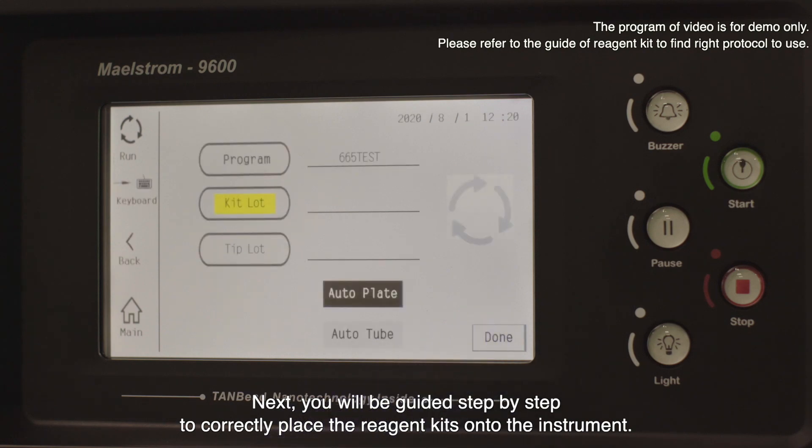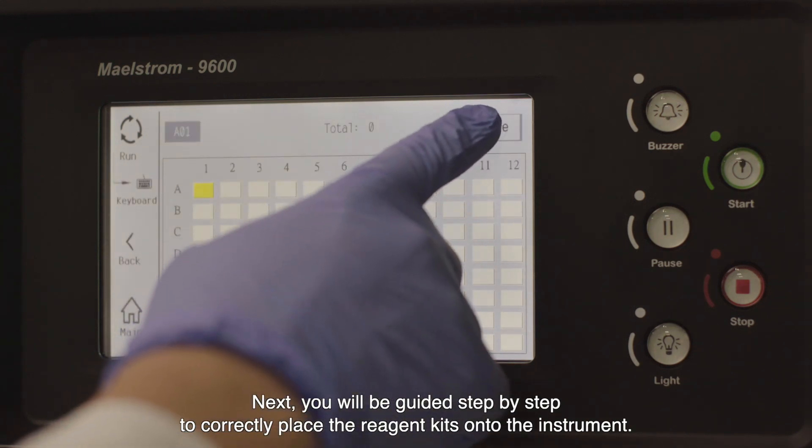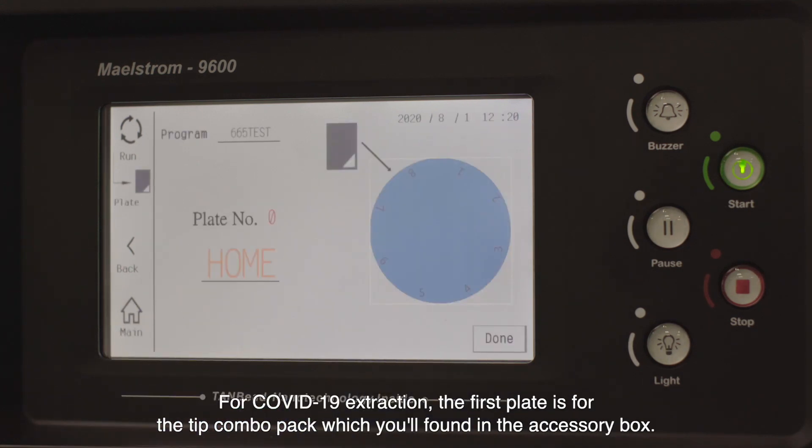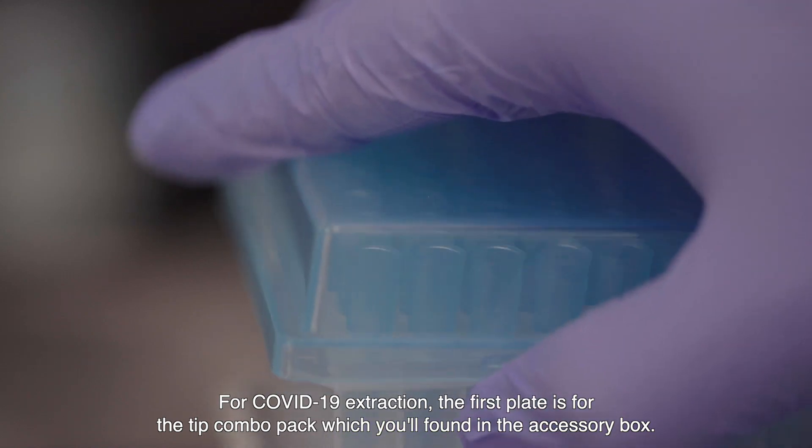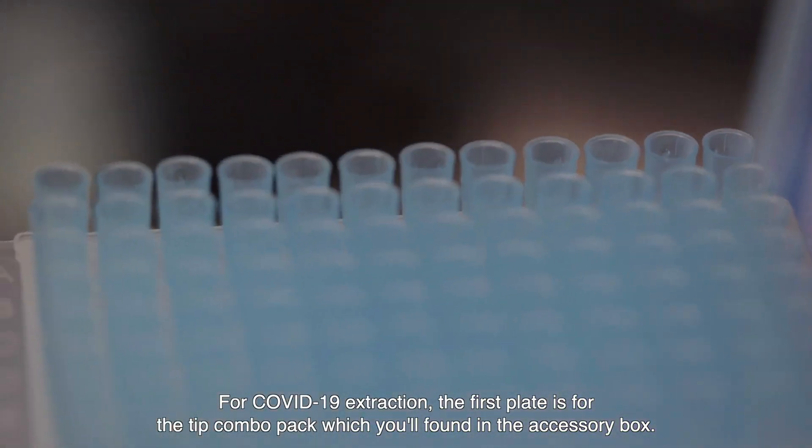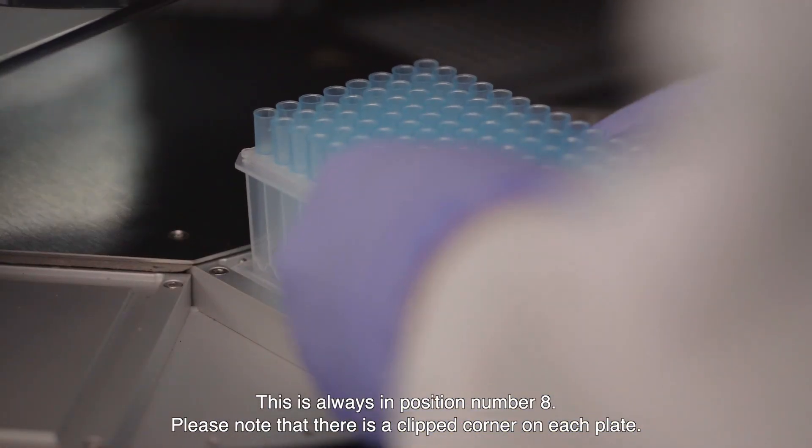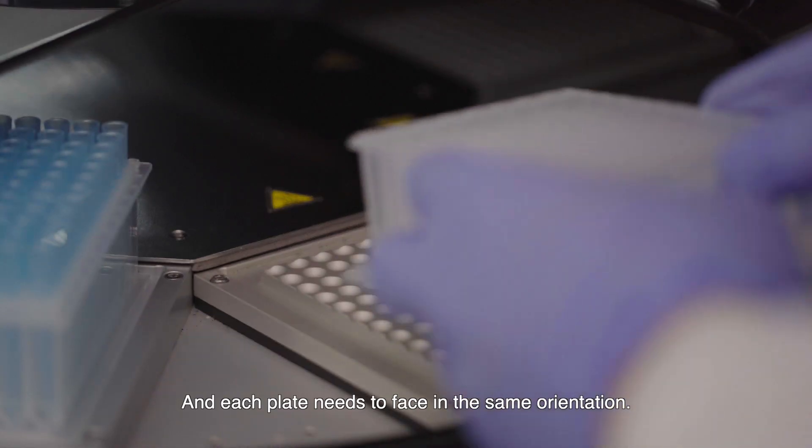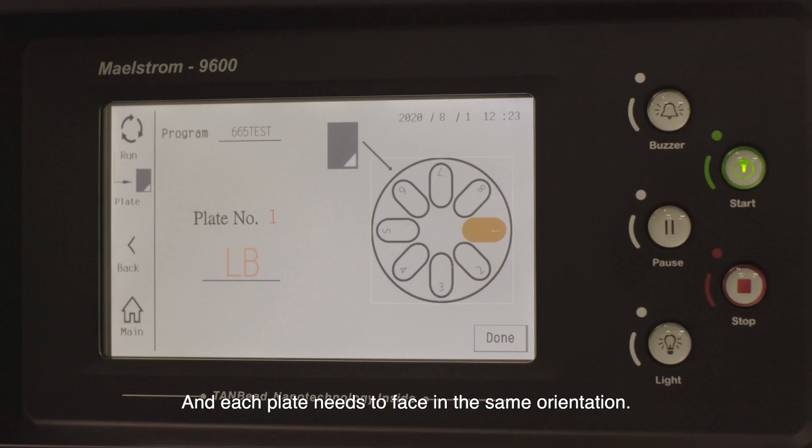Next, you will be guided step by step to correctly place the reagent kits onto the instrument. For COVID-19 extraction, the first plate is for the tip combo pack which you found in the accessory box. This is always in position number eight. Please note that there is a clipped corner on each plate and each plate needs to face in the same orientation.